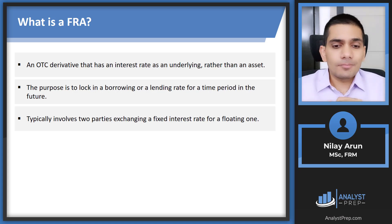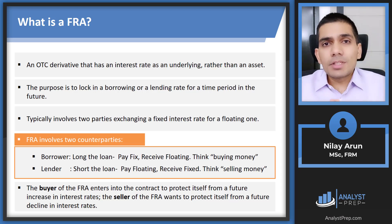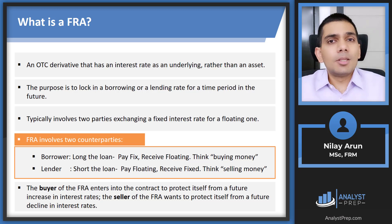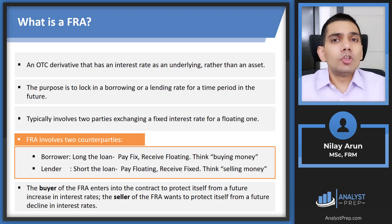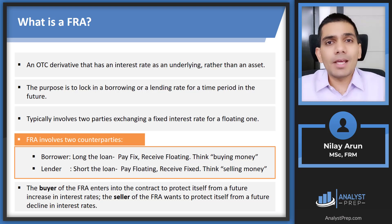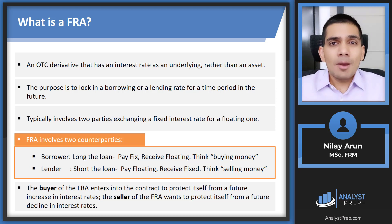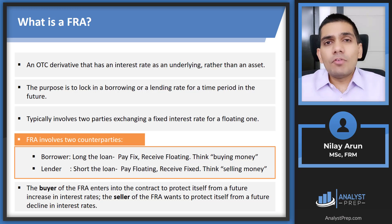FRA involves two counterparties, and this terminology can be quite confusing. In any forward contract, long is the party that wants to buy the underlying and short is the party that wants to sell. But in an FRA there is nothing to buy or sell — no physical or financial asset. So think of going long as buying the money — you're essentially taking the loan, which means you are the borrower.